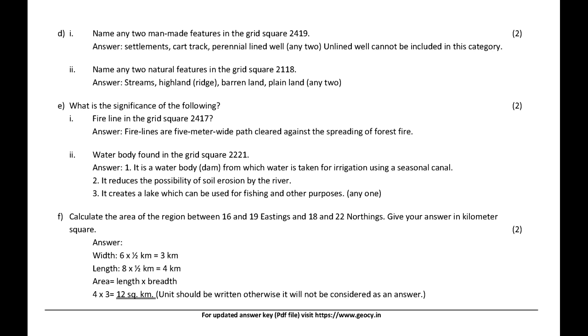Name any two natural features in the grid square 2118. Answer: Streams, highland, ridge, barren land, plain land — any two.